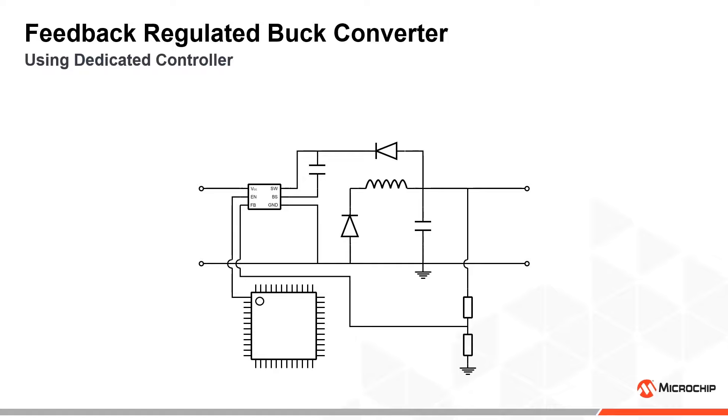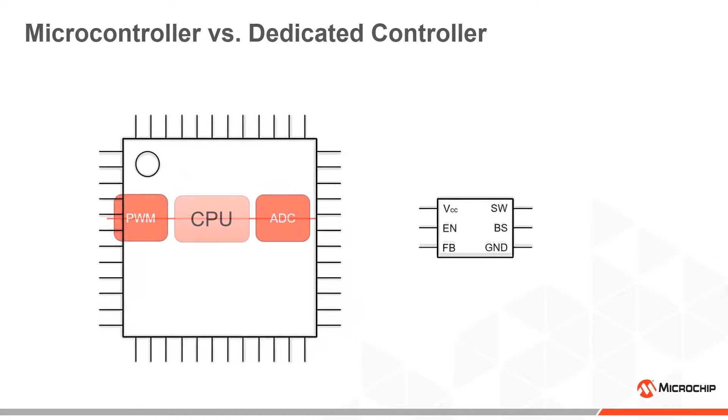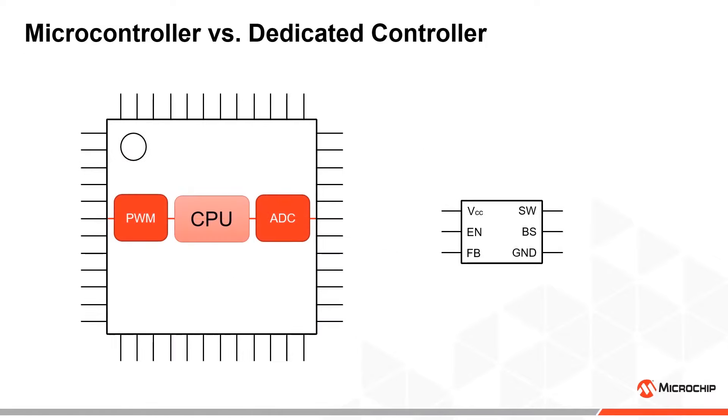The switching control is often handled by a dedicated controller IC as the regulation process is very active and would require too much monitoring by the CPU for it to handle any other tasks. The power consumption of a CPU is also much higher than the other solutions and would therefore reduce efficiency.